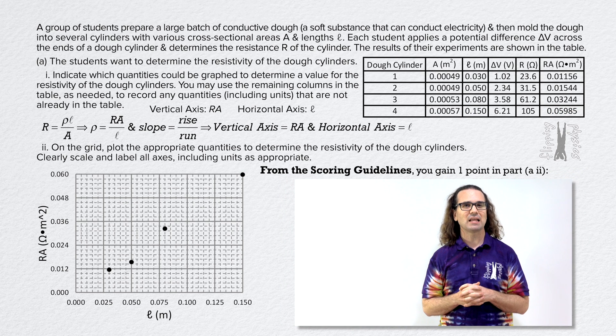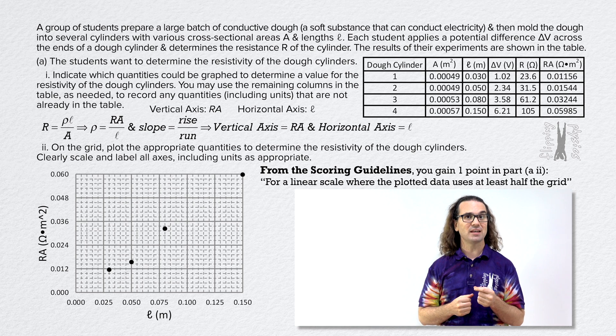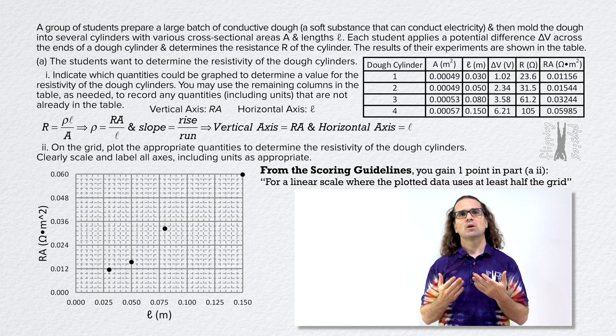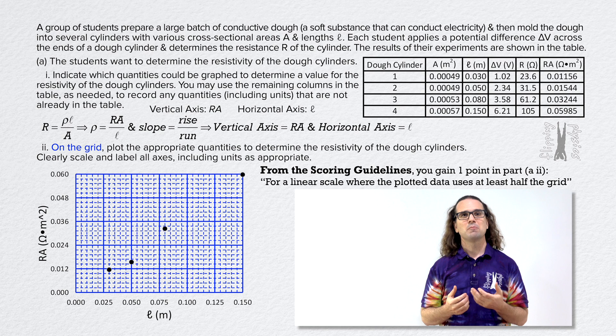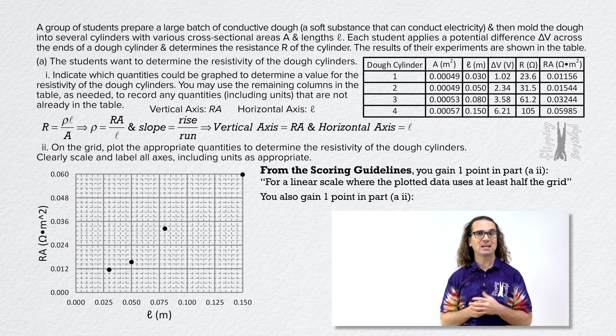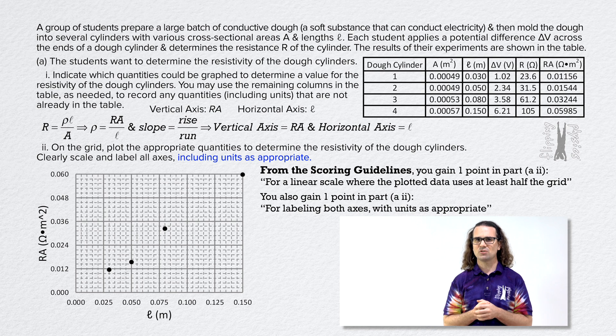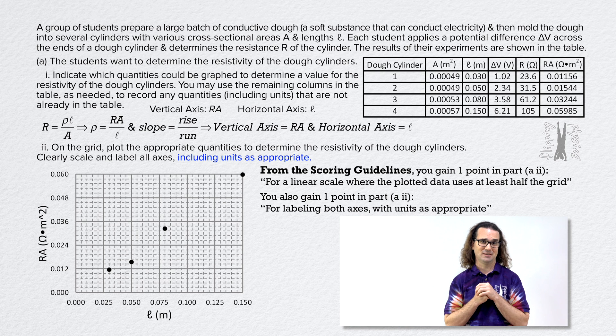Okay, more from the scoring guidelines. You gain one point in part AII for a linear scale where the plotted data uses at least half the grid. So, when they provide you with a grid to plot your graph, make sure you use at least half of the space provided in the grid. You also gain one point in part AII for labeling both axes with units as appropriate. Okay, it literally tells you to do this in the problem statement. However, enough of my students forget to do this that I feel it is necessary to point it out. Somehow, y'all remember to add numbers. However, it is difficult for you to remember to label your axes and include units.